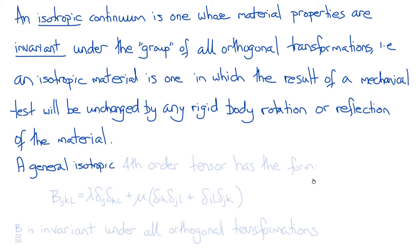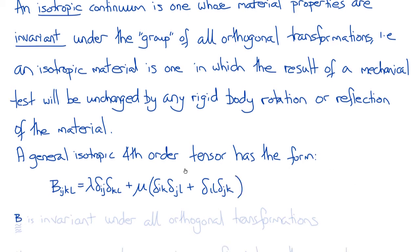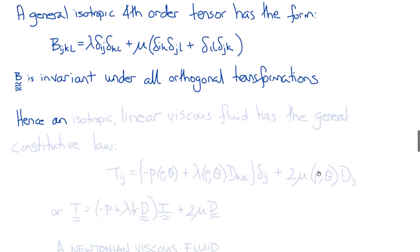In general, any fourth-order tensor that is isotropic can be written in the following form: B_ijkl equals lambda times delta_ij delta_kl plus mu times delta_ik delta_jl plus delta_il delta_jk. These are the components of the fourth-order tensor that is invariant under all orthogonal transformations.